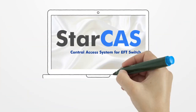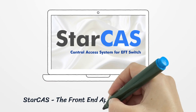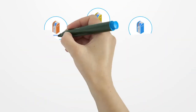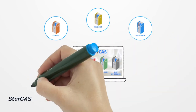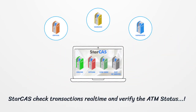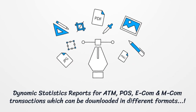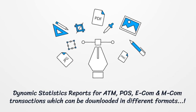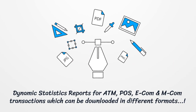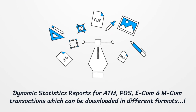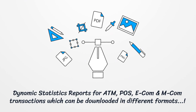EasyLink Enterprise comes with an optional package called StarCAS, which acts as a front-end application for EasyLink Enterprise. StarCAS supports mainly checking transactions in real-time and verifies the ATM status like online, offline, or out of service. Other outstanding advantages of having StarCAS are that it provides dynamic statistics reports for ATM, POS, ECOM, and MCOM transactions, which can be downloaded in different formats such as PDF, PNG, and JPEG.